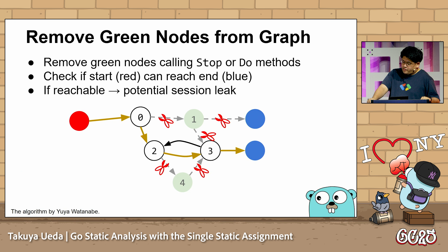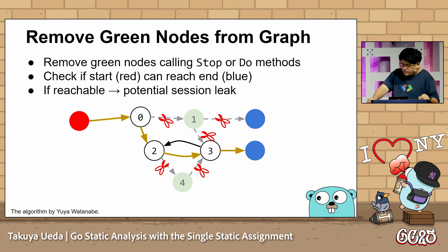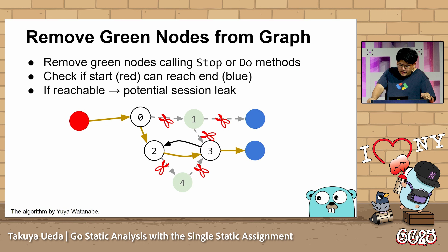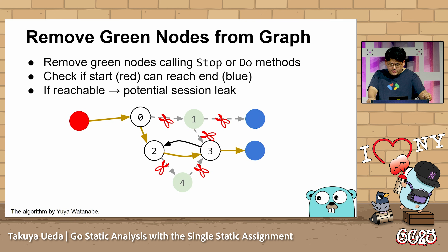Checking all paths from red to blue can be complex and expensive, so we use a different approach. Instead of listing all paths, we remove the green nodes from the graph — green nodes are where stop or do is called. Then we check if there is still a path from red to blue. If there is, it means there's a way to execute without calling stop or do, which is a session leak. This approach is much simpler and more efficient.